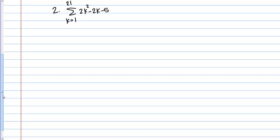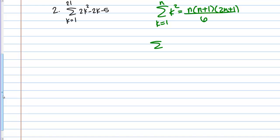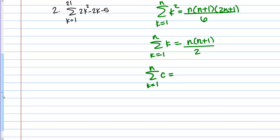Once again, we can use the sum formulas to calculate this more efficiently. Let me write the relevant formulas to the side. We see we have a K squared, so we'll need the formula for K squared — it's the most messy. It looks like this: N times N plus 1 times 2N plus 1 over 6. The sum of K is N times N plus 1 over 2. And there's also a formula for the sum of a constant C, which is C times N.